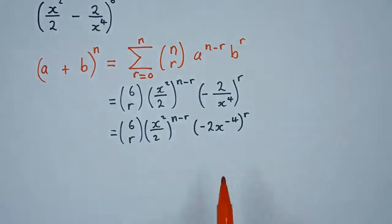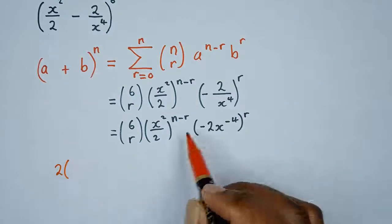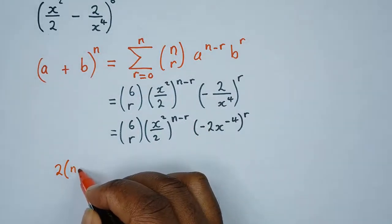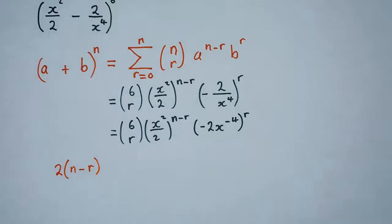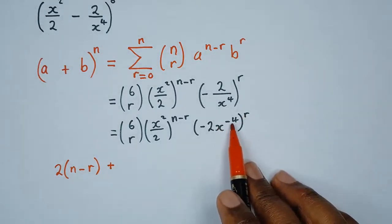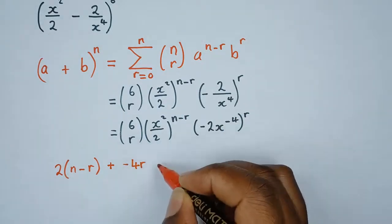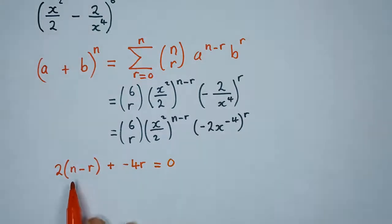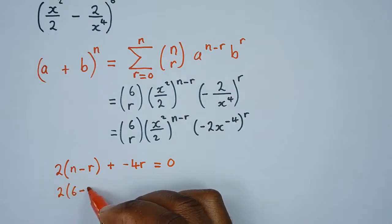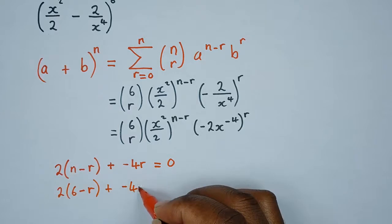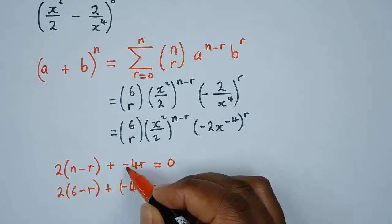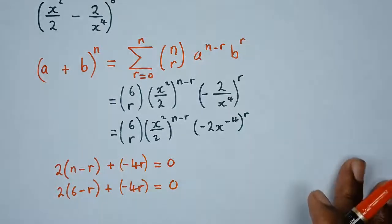Focusing on the powers of x only: the power of x inside the first term is 2, so we have 2 times (n minus r). Then we add the power from the second term, which is negative 4r. Everything equals zero. Substituting n = 6, we get: 2(6 minus r) plus (negative 4r) equals zero.